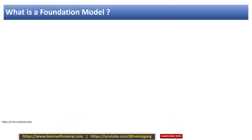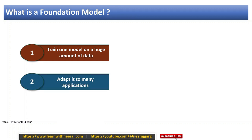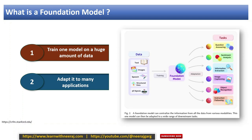A foundation model is trained on a huge amount of data — it is a single model trained on a very large amount of data. A single model can adapt to many applications; there will be some kind of fine tuning required to let it adapt, which we will see in future videos. For now, remember these two things: it is trained on huge amounts of data and it can adapt to more than one type of application.